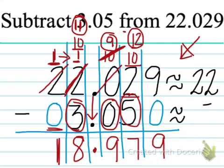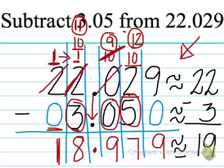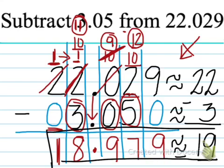And 3 and 5 hundredths is really close to 3. And when you subtract those, you get 19. So 18 and 979 thousandths is approximately 19, and since that works out nicely, I expect my answer is reasonable.